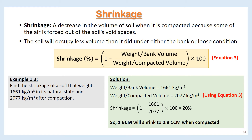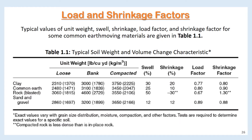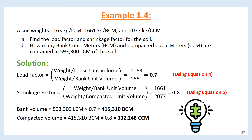Load factor is used to convert loose volume to bank volume. Using equation 4, load factor equals weight per loose unit volume divided by weight per bank unit volume, or 1 divided by (1 plus swell). Shrinkage factor converts bank volume to compacted volume. Using equation 5, shrinkage factor equals weight per bank unit volume divided by weight per compacted unit volume, or 1 minus shrinkage. Typical values of unit weight, swell, shrinkage, load factor, and shrinkage factor for common earth-moving materials are shown in table 1.1.